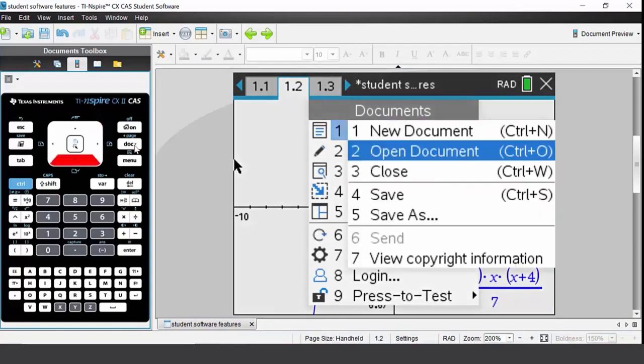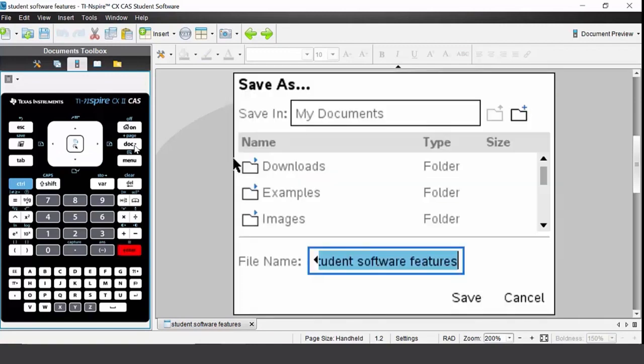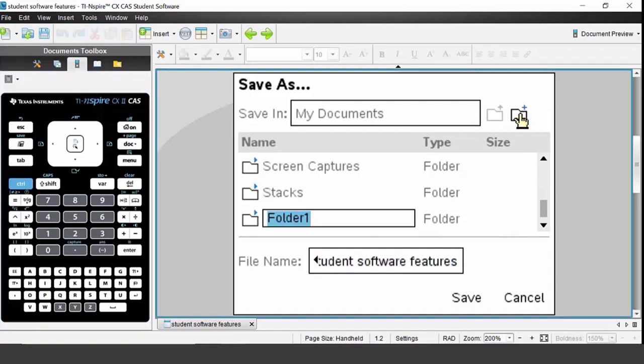Come down to option 5 which is save as. It will prompt you to save it into the my documents folder. You can save it directly into there by giving it a file name. You may wish to create a new folder, in which case you press on the new folder icon.